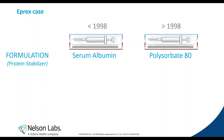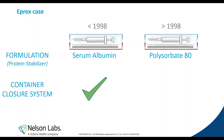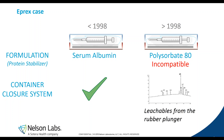Something very important here is that this formulation was contained in the same container closure system, in the same pre-filled syringe. So the materials in contact with this formulation were exactly the same using both formulations. The container closure system was compatible with the serum albumin formulation, but was found to be incompatible with the new polysorbate 80 formulation. A different leachable pattern was observed, and the leachables were found to be related to the rubber plunger present in this pre-filled syringe.